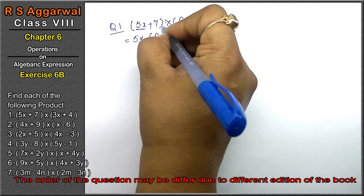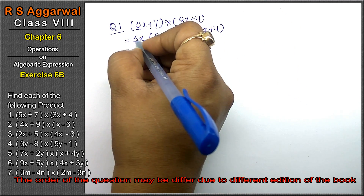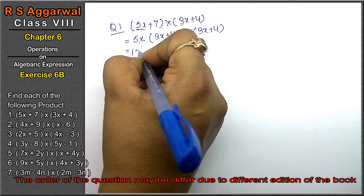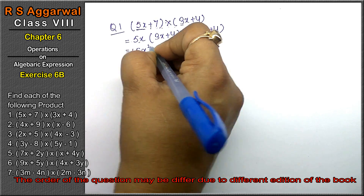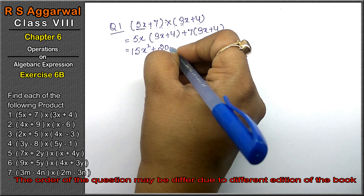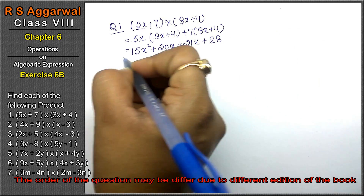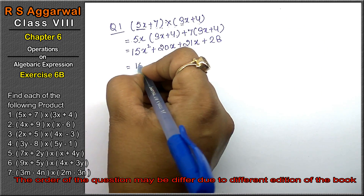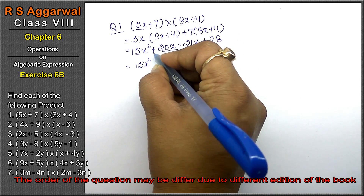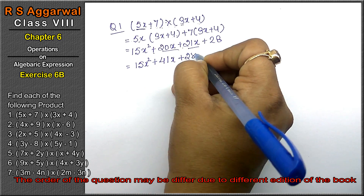Plus 7 or minus 7, whatever the number, multiply it from the whole bracket. First multiply: plus times plus is plus. 5 times 3 is 15, x times x is x square. Plus 5 times 4 is 20x. Plus 21x plus 28. So we get 15x square. The x terms are 20x plus 21x, both positive, so add: 41x. Plus 28 is the answer.